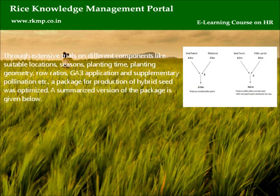Through extensive trials on different components — such as suitable locations, seasons, planting time, planting geometry, row ratios, GA3 application and supplementary pollination — a package for production of hybrid seed was optimized. A summarized version of the package is given below.